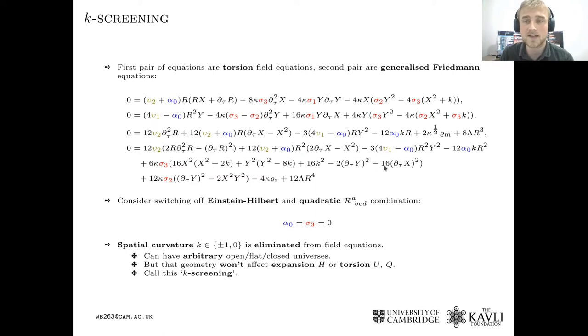So what that means is the universe could be flat, open, or closed, but the expansion rate would not be able to see that. It would not affect either the expansion rate, the Hubble number, or the torsion evolution. We call this phenomenon k-screening, and it's not necessarily a complete disaster because in Lambda-CDM we normally take the universe to be flat anyway. We don't have a tremendous amount of evidence to suggest otherwise.